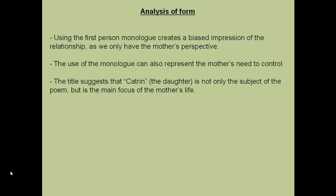Form: using the first-person monologue creates a biased impression of a relationship — we only have the mother's perspective. It's not clear how the child necessarily feels, even when the child is described as being defiant. Is that true, or is that just from the mother's perspective? The use of the monologue can also highlight the mother's need to control, in that she will not allow the child to have a voice in this poem.